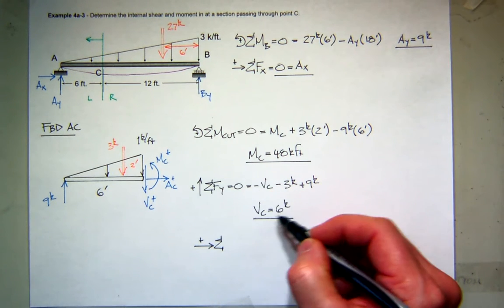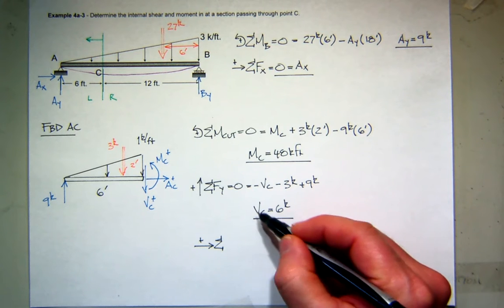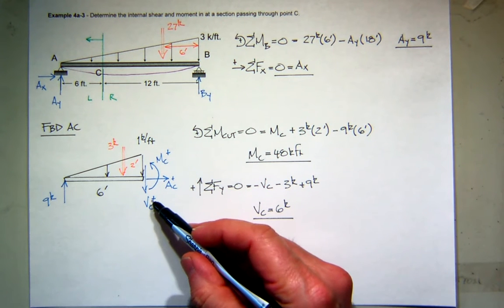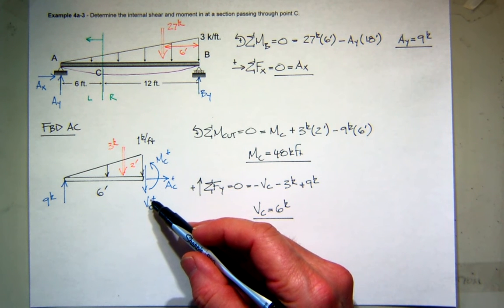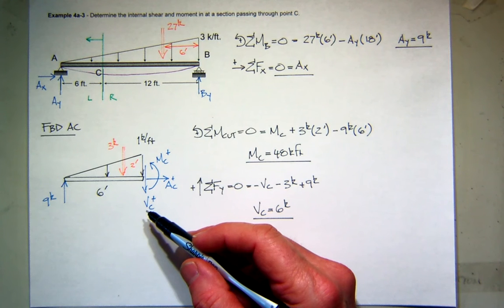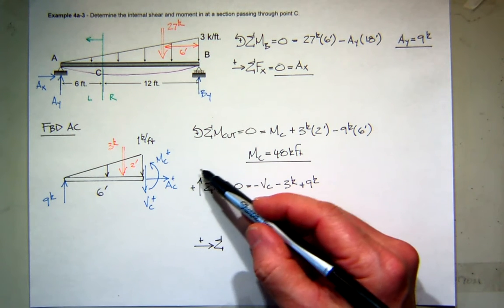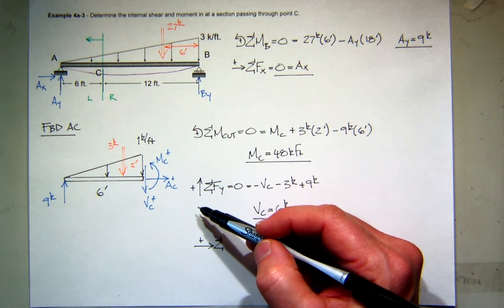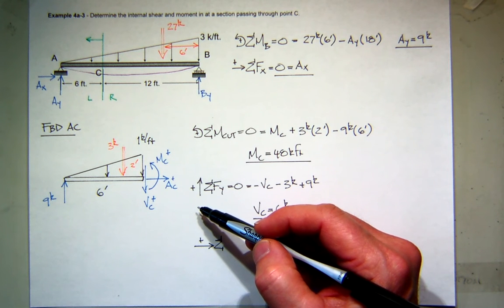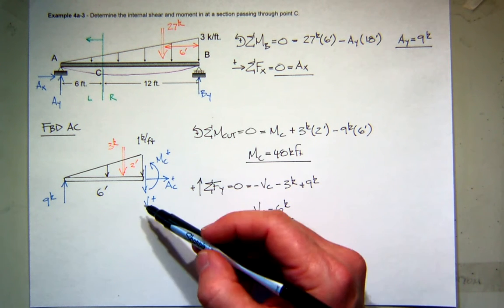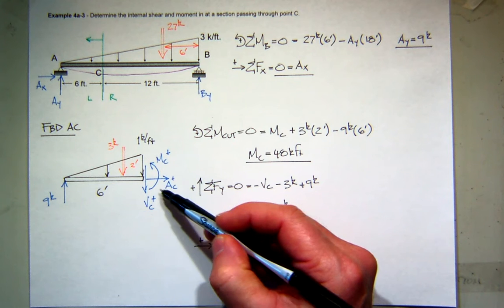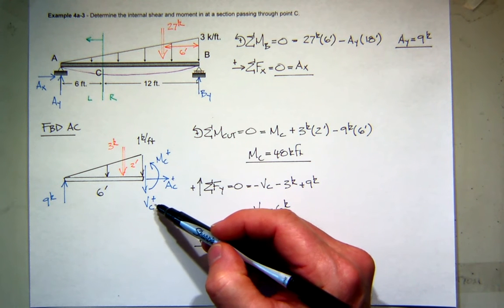When I solve for it, I got a positive value, so that means I assumed the right direction. So it is a positive shear force. I assumed positive shear force. I got a positive result. This sign convention is arbitrary. You can choose any way you want. But you cannot choose this any way you want. This is positive shear force. That's it. There is no other way.